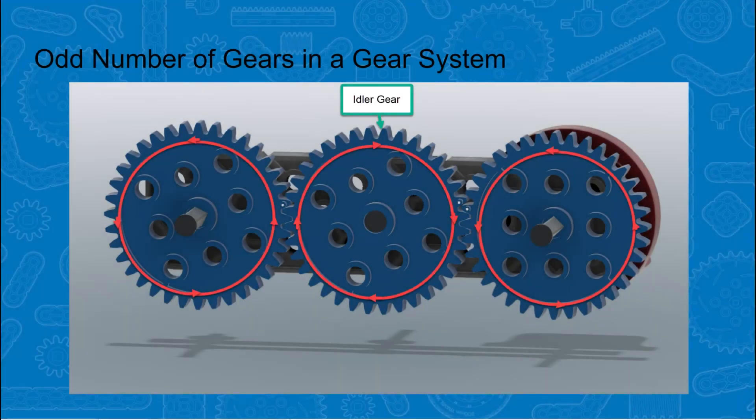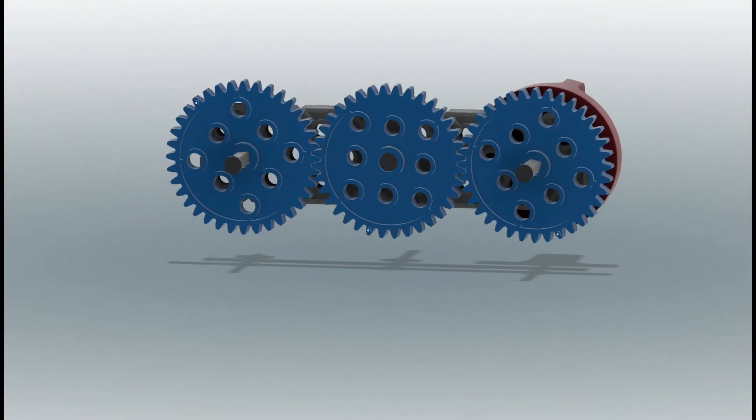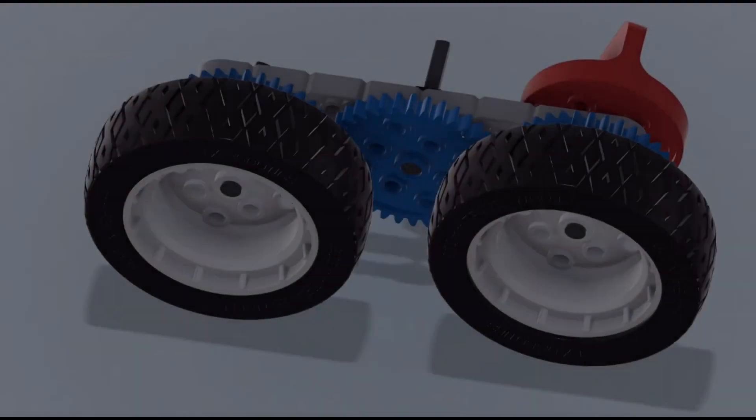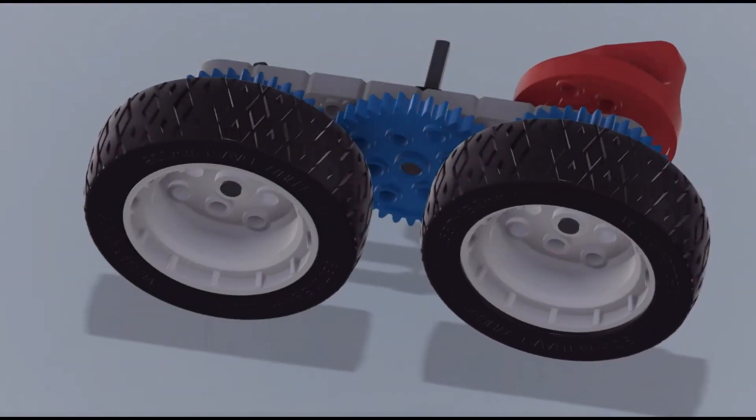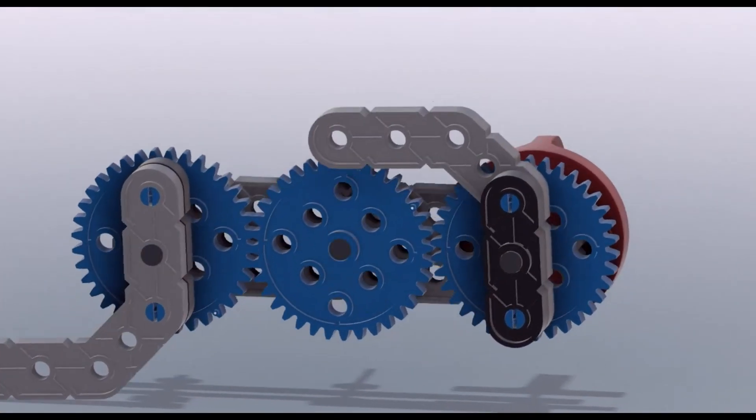When there is an odd number of gears in a gear system, the output gear rotates in the same direction as the input gear. Any gears between the input gear and the output gear are called idler gears. The size of the idler gears do not affect the output. An odd number of gears works very well for a drive system, but you can probably guess what would happen with some grippers.